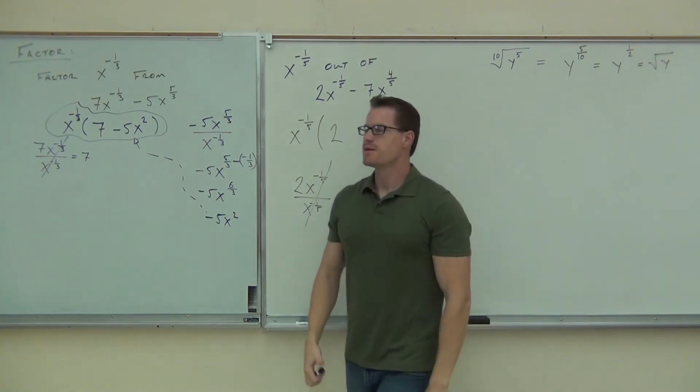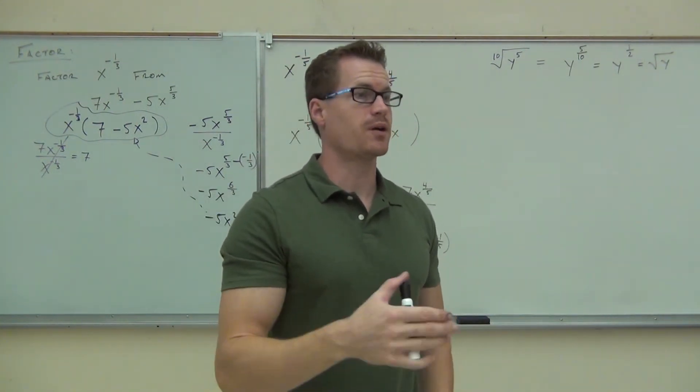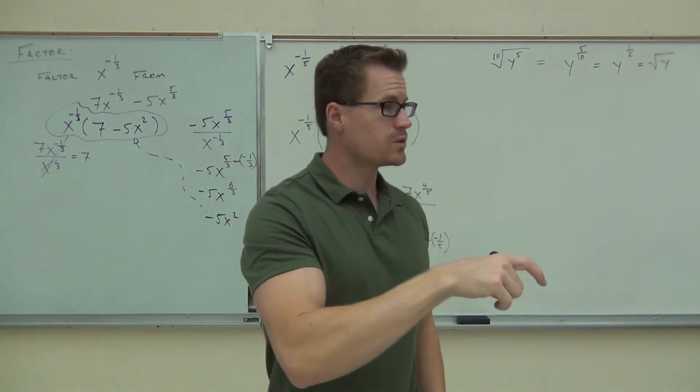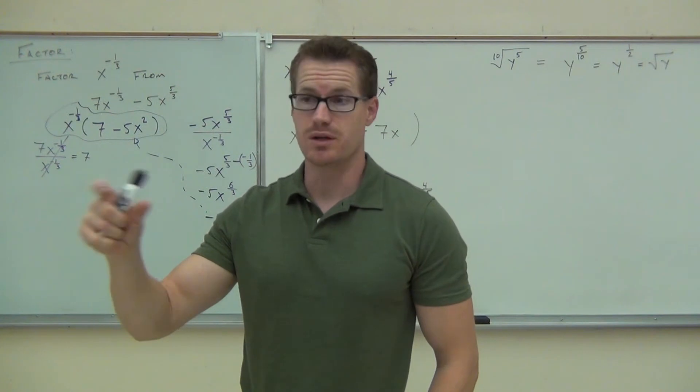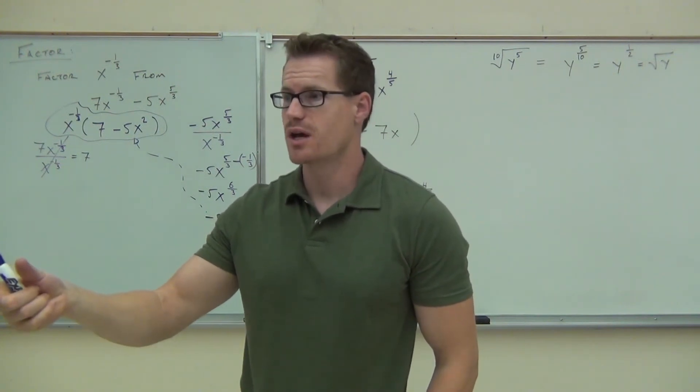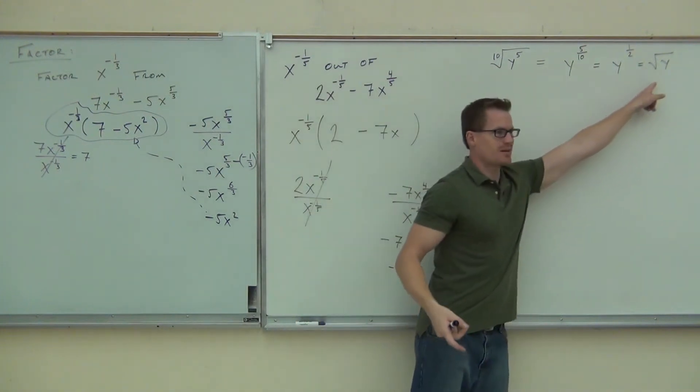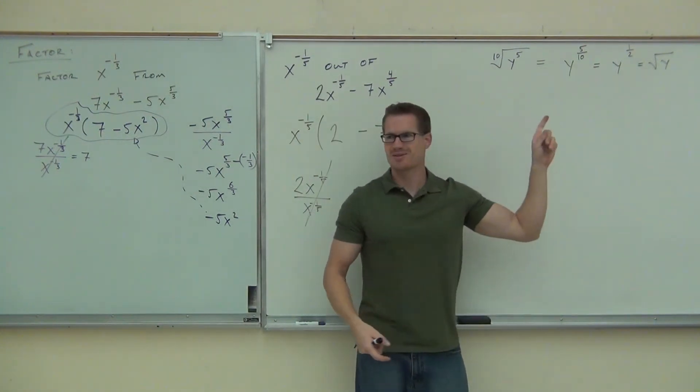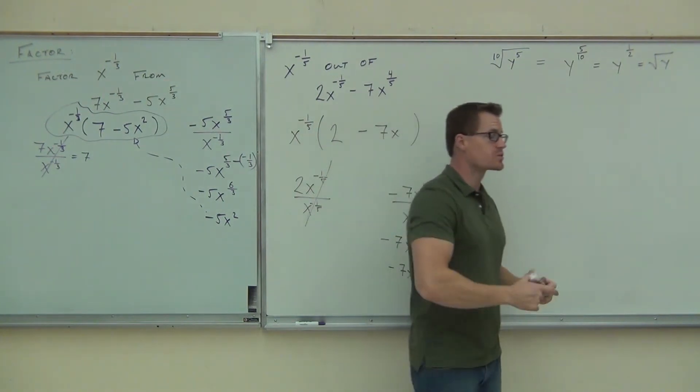Can you write one half back as a root? What type of root is it? Square root of y to what power? One. What this means is the tenth root of y to the fifth actually equals the square root of y. That's kind of cool, right? This is one way that you can use fractional exponents to simplify roots. You take your root, you write it as a fraction, you simplify those fractions, you write them back as a root. It makes things a lot easier to do.